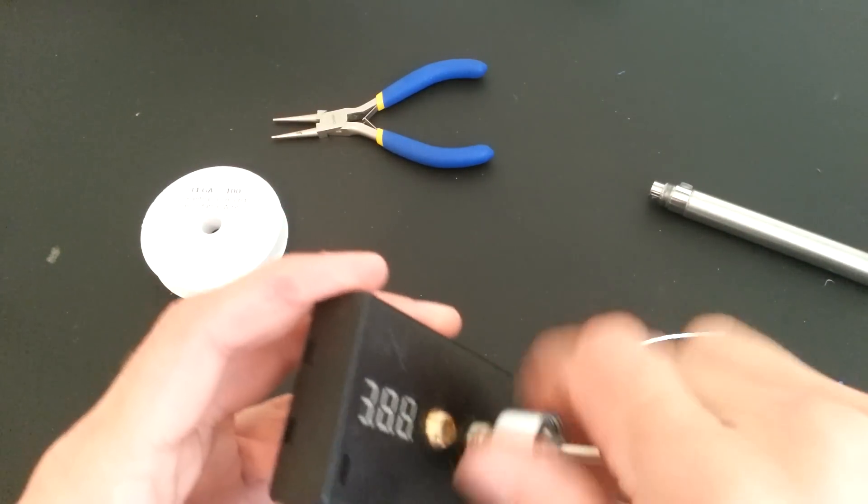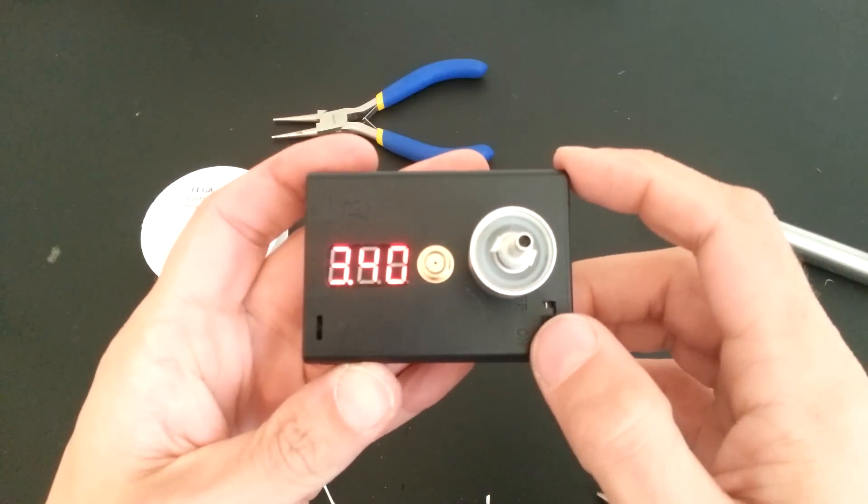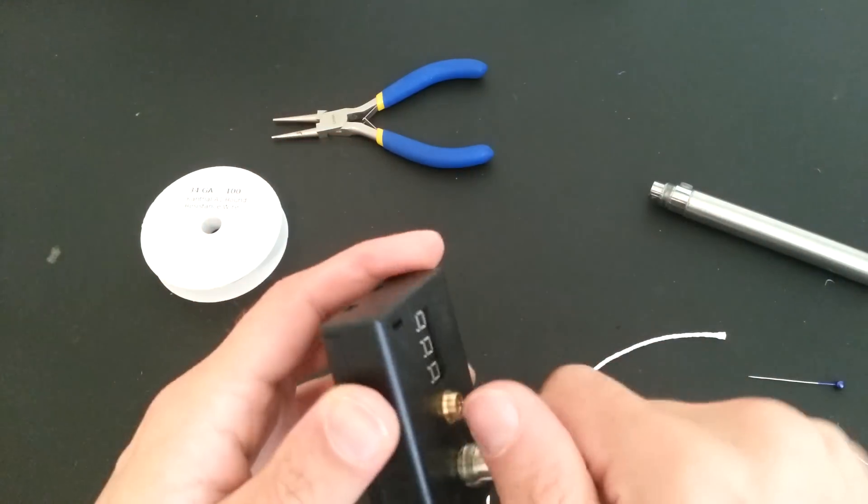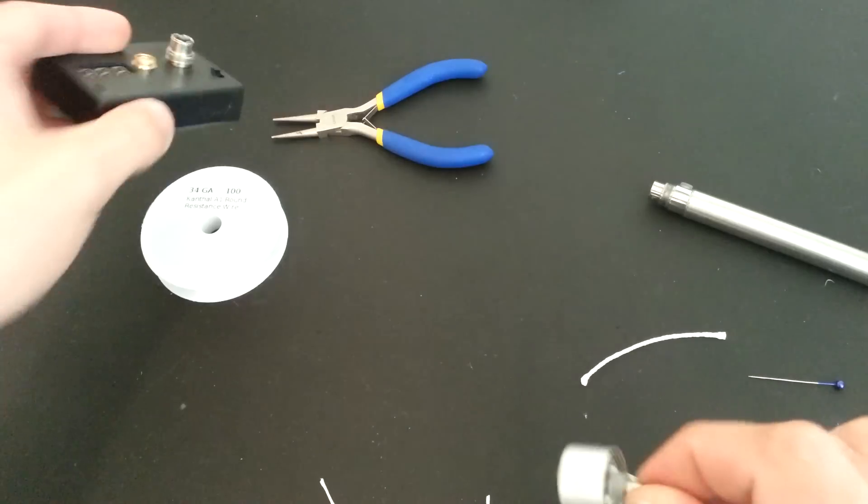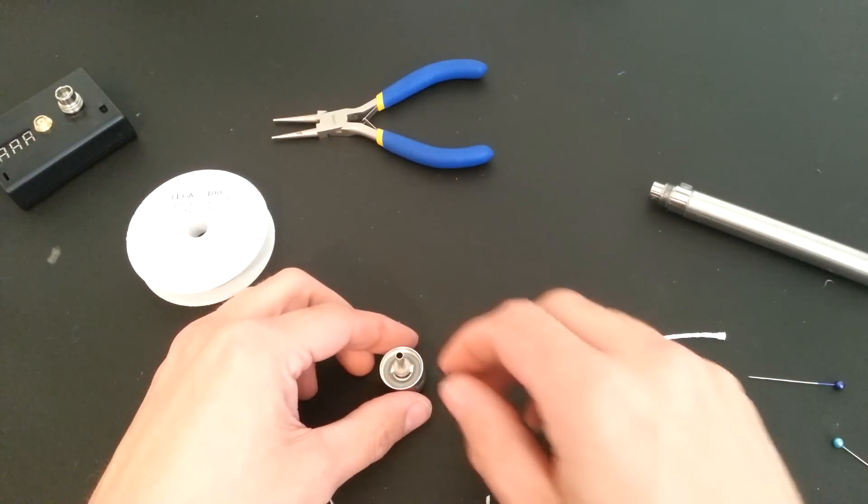Screw this in to make sure that we have no shorts. 3.4 ohms. That's not bad. 34 gauge. If you use 32, you'll get slightly lower resistance, somewhere around the 1.8 to 2 range.